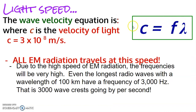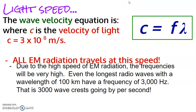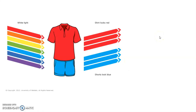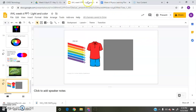The speed of light equation is the same as any wave equation, except velocity is replaced with c — the speed of light. The 'c' actually came from the Latin word 'celeritas,' meaning swift. The speed of light is constant for all electromagnetic radiation: 3 × 10⁸ meters per second, or 300 million meters per second. It doesn't matter whether it's radio waves or gamma rays — they all travel at that same speed.